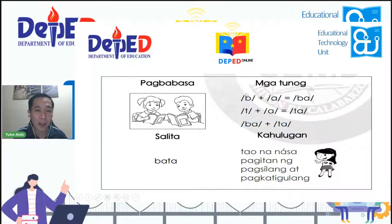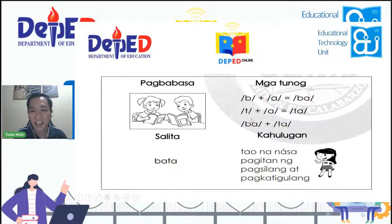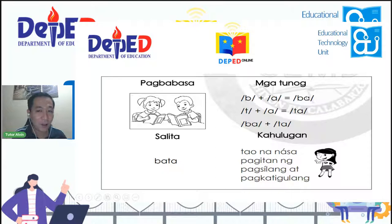Itong letrang B — ano nga ba ang tunog nito? Pag merong kayo nakita ganito, ibig sabihin tunog yan: ba, ba, ba. Dadagdagan natin ng tunog ng A — A, A — magiging 'ba'. Ngayon, ito namang titik T. Paano ang tunog nito? T, T, plus A, A — magiging 'ta'. At pag pinagsama natin ang dalawang tunog na ito, magiging 'Bata' ang basa natin.